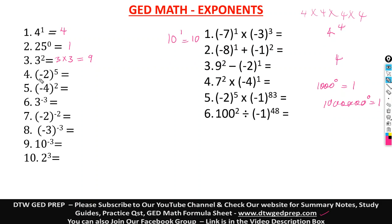Number 4: negative 2 in parentheses raised to power 5. That means we're going to have negative 2 times negative 2 times negative 2 times negative 2 times negative 2 — five places. Now, there are a lot of negatives here. How do you know your answer quickly? You can start doing negative times negative — you get positive; positive times negative — you get negative.